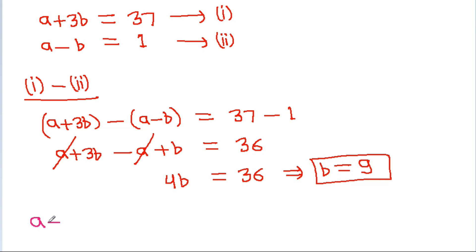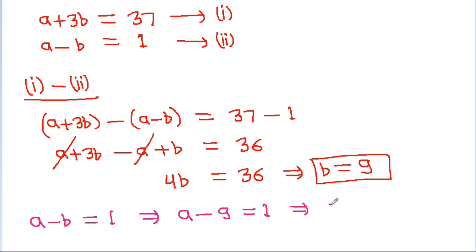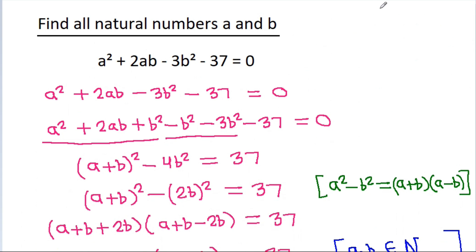And from a minus b equals 1, substituting b equals 9, we get a equals 1 plus 9, that is 10. So a is 10 and b is 9.